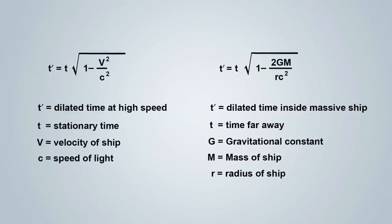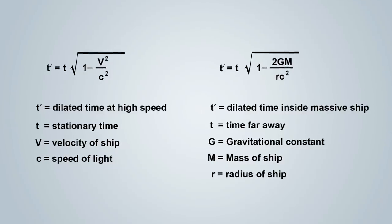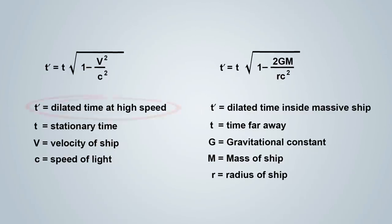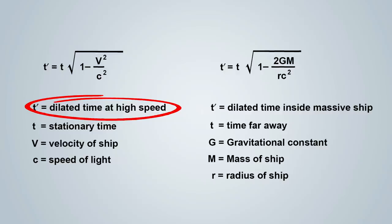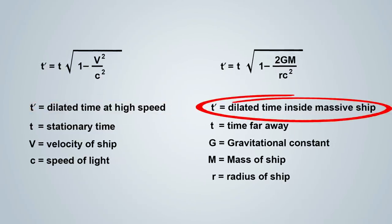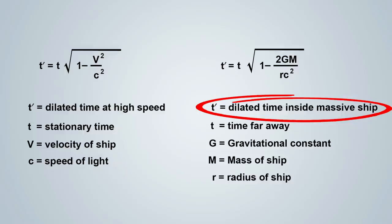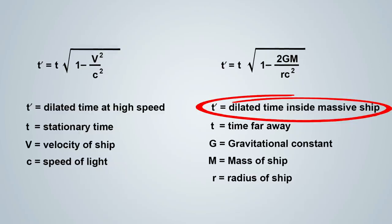In general relativity, there are two ways to produce significant time dilation. You can either go really fast, faster than 90% of the speed of light, or you can put yourself in a very strong gravitational field. The stronger the gravitational field, the slower time ticks relative to a weaker gravitational field.